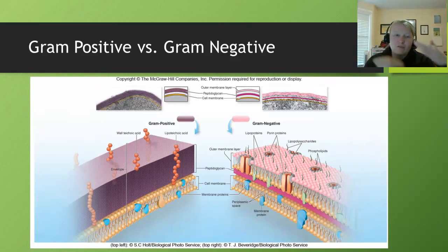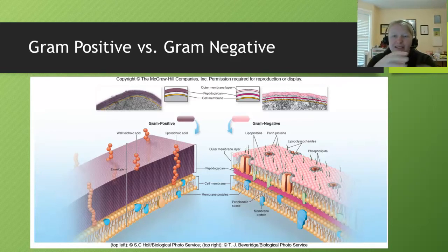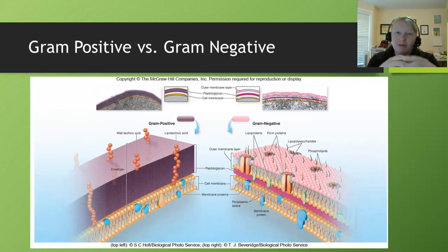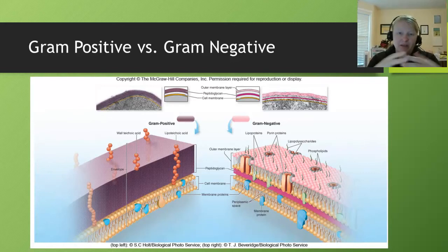The gram-positive structure has a really thick peptidoglycan wall — you can see that on the slide. This is what takes in the dye, and we're going to talk about how that dye works on the next slide. It also has various acidic structures found within this peptidoglycan, and the acids help the cell maintain the wall. Underneath that thick peptidoglycan is the cell membrane, which is the phospholipid bilayer you've talked about with eukaryotic membranes. That's a standard cell membrane with membrane-bound proteins within it.